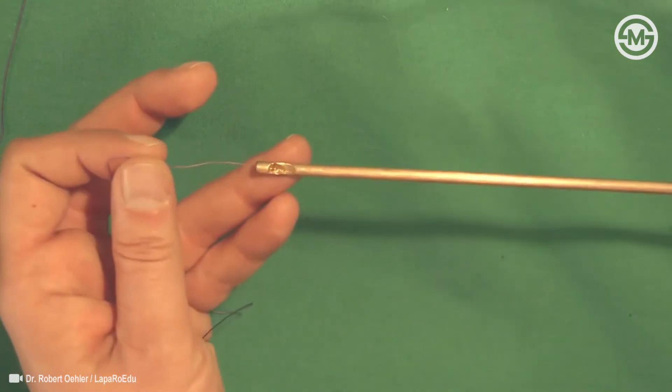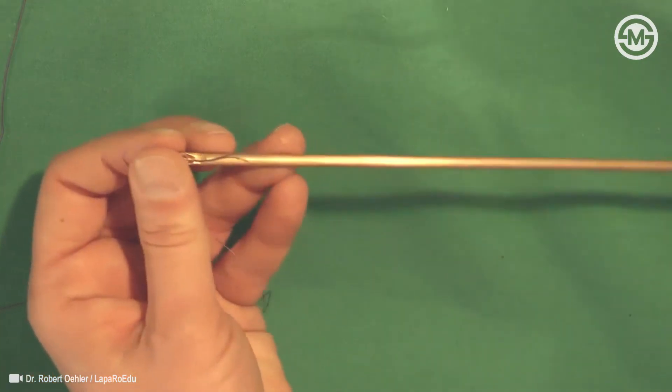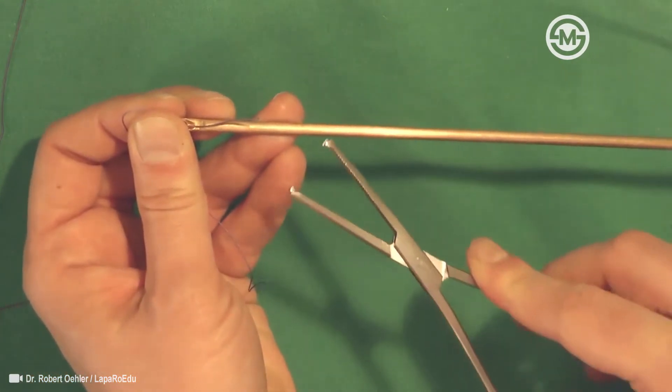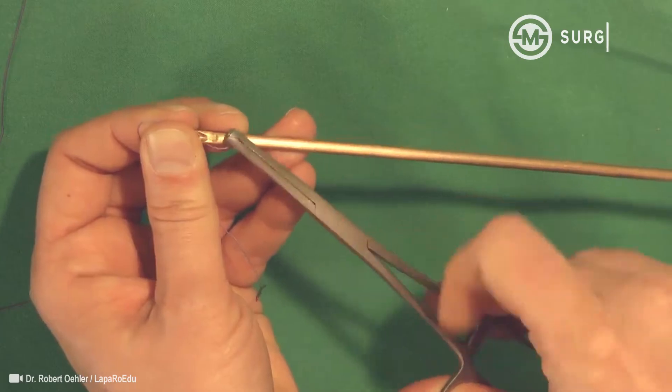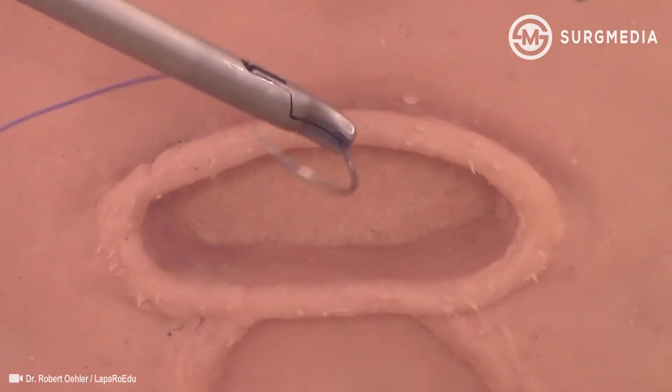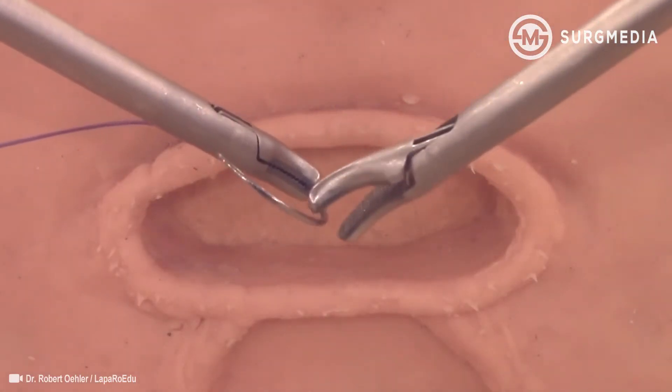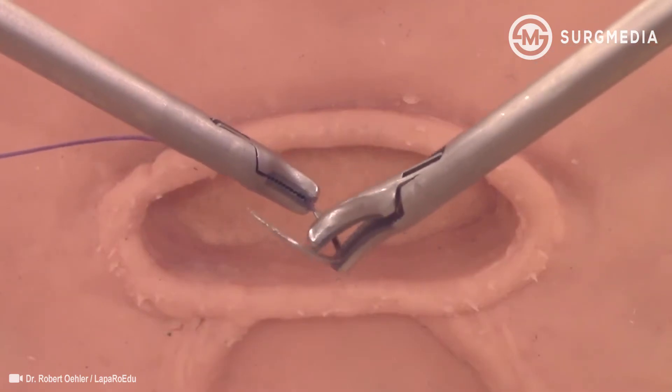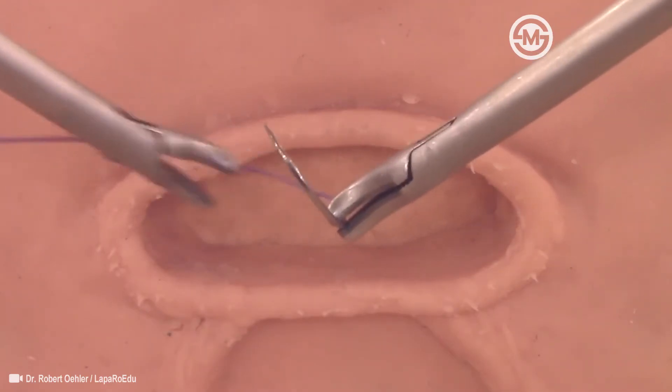Before or during suturing, the free end of the thread is inserted into the nut pusher and secured with forceps. In the abdomen, rotate the needle holder until a good position is found to grasp the needle. Before suturing, the path of the needle is visualized.